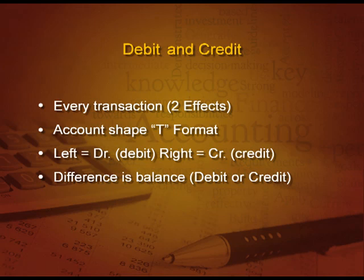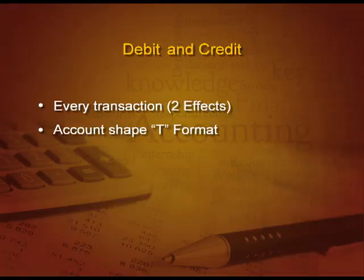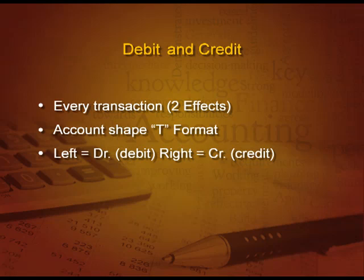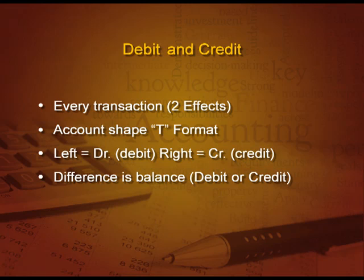Now let us understand another very important aspect of accounting: debit and credit. The double entry system was started by Luca Pacioli, an Italian mathematician. Every transaction has two effects — one debit and one credit. We make an account in T-format: the left-hand side shows the debit side and the right-hand side shows the credit side. The difference is the balance — it can be debit or credit depending on which side is larger.